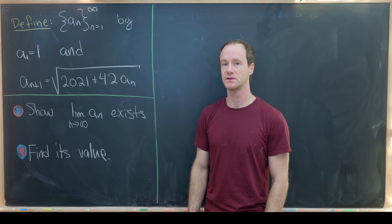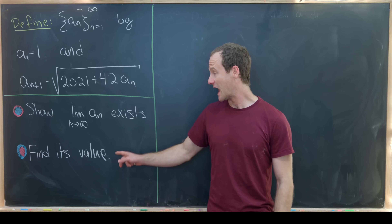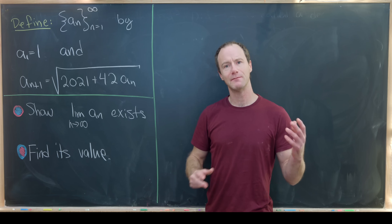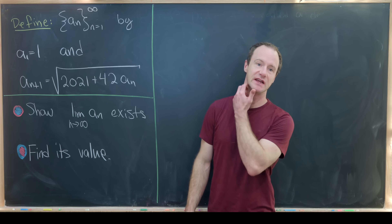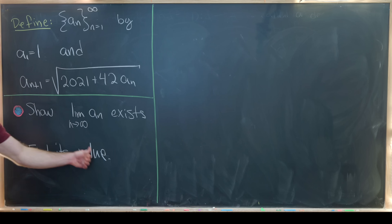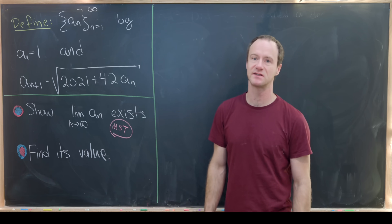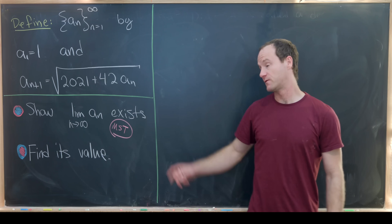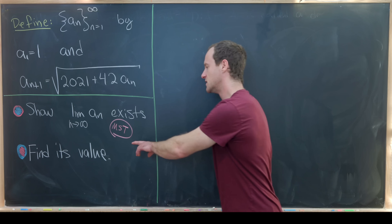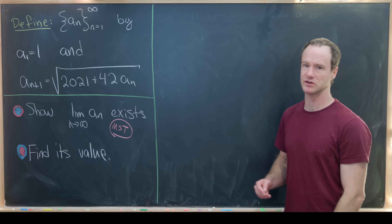We have two goals: show that the limit as n approaches infinity of a_n exists, and find its value. We're going to do this a little out of order — it might seem like cheating, but it isn't. We'll find the prospective value first in order to use the Monotone Sequence Theorem to show the limit exists, and knowing that value helps us find an upper bound.